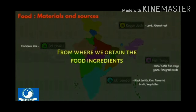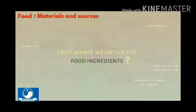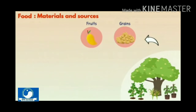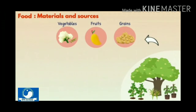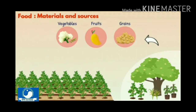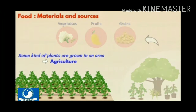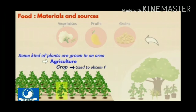Now, tell me from where we obtain the food ingredients to prepare a dish. Primarily, the food ingredients are obtained from plants and animals. From plants, we obtain grains, fruits and vegetables. For obtaining these materials, the same kind of plants are grown in an area — we call it agriculture. The plants grown in an agricultural area are called a crop, and the crop used to obtain food is called a food crop.